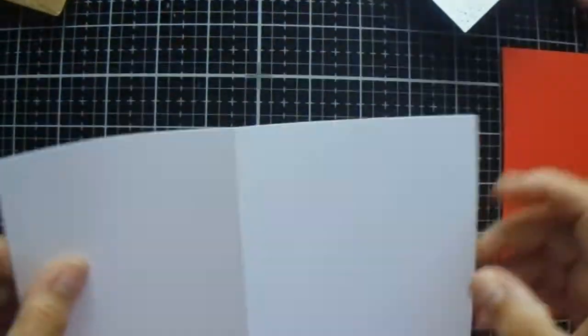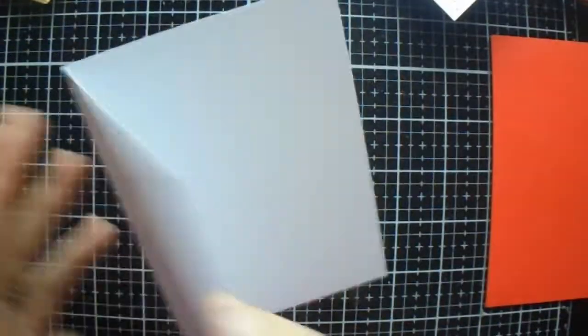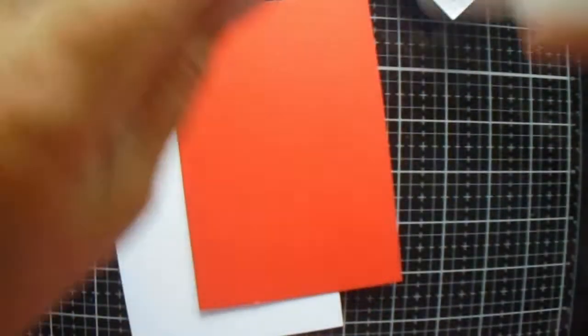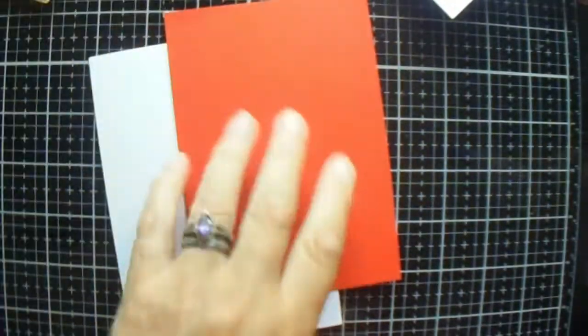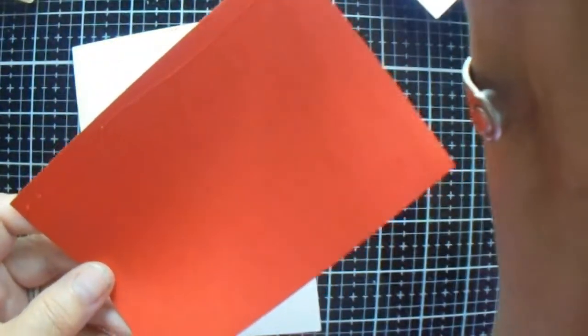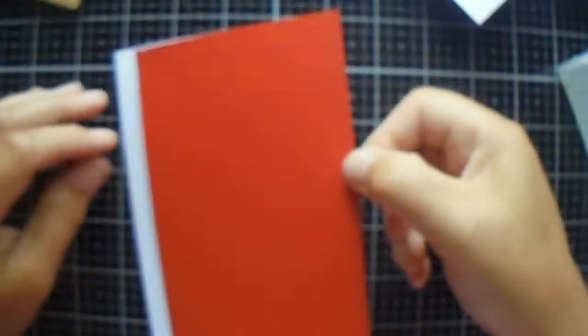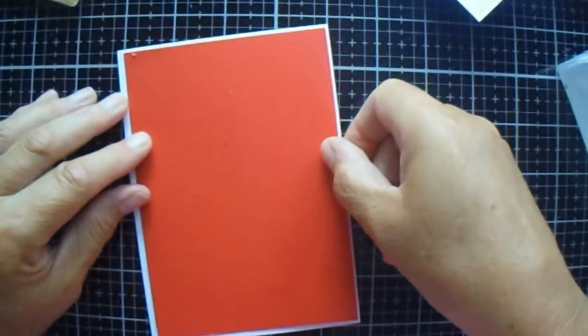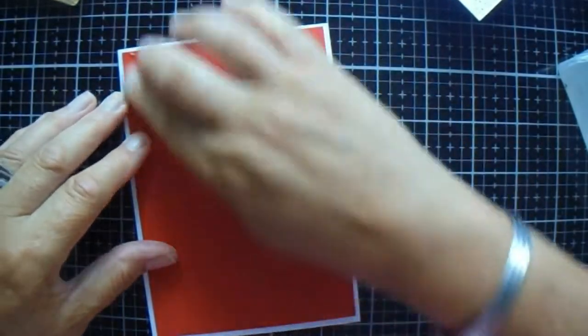Once again, my card base is 8 and a quarter by 5 and three quarters, scored at 4 and one eighth. Then this red layer will be 5 by 5 and five eighths approximately, and my white layer will be 4 by 5 and three eighths.